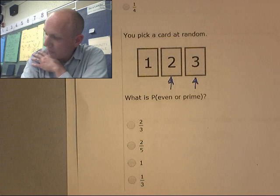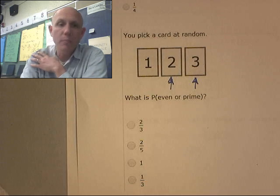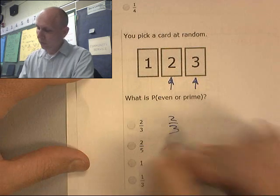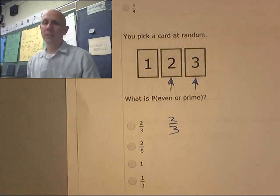So what is the probability of even or prime? 1 is not even. 1 is not prime. So it is not going to be included in this. So I have two out of three. Two favorables out of three possibles.